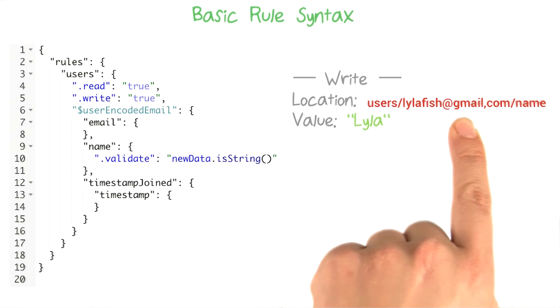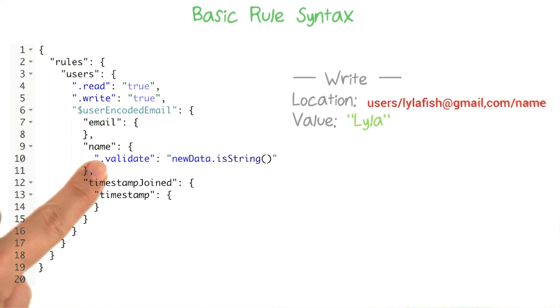any rules that are at the lilafish at gmail.com location, which is this wildcard variable here, there aren't any rules here. And at the name location, which has one validate rule here. So in total, because this is a write, these two rules would be checked.